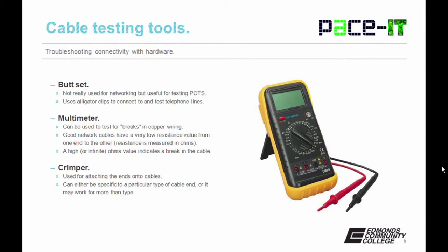Then there's the multimeter. These can be used to test for breaks in copper wiring. Good network cables have a very low resistance value from one end to the other. Resistance is measured in ohms, and a high or infinite ohms value indicates a break in the cable.